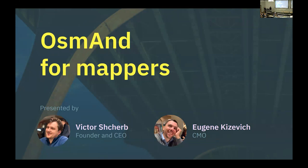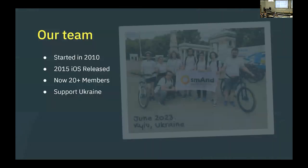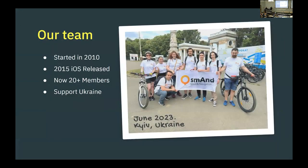Hi everybody, today we are going to talk about OsmAnd for mappers. I am Victor, I started the project in 2010. I am Eugene and I joined OsmAnd in 2015. Right now we have more than 20 team members, currently in tough conditions in Ukraine — mostly cannot leave the country, but they say hello from Kyiv. Thank you for supporting Ukraine. It's the first time we are here at OpenStreetMap US and we really like it, glad to be here finally.